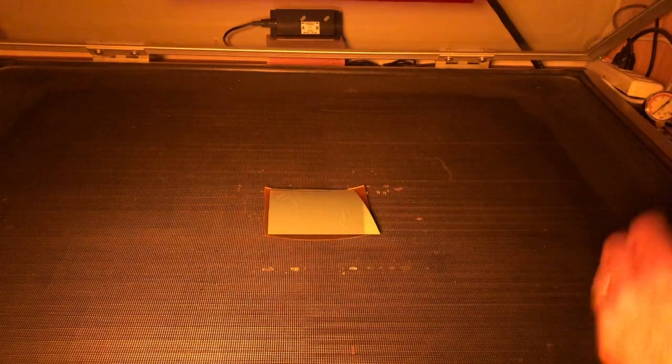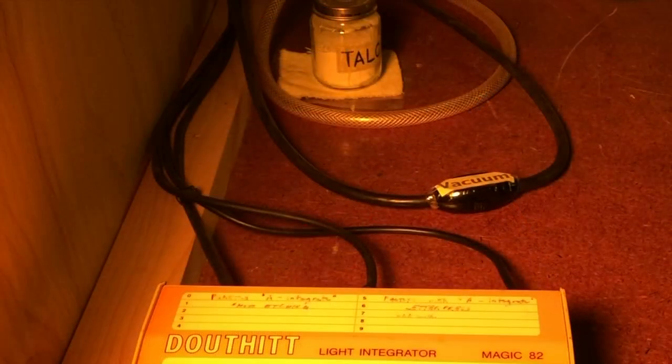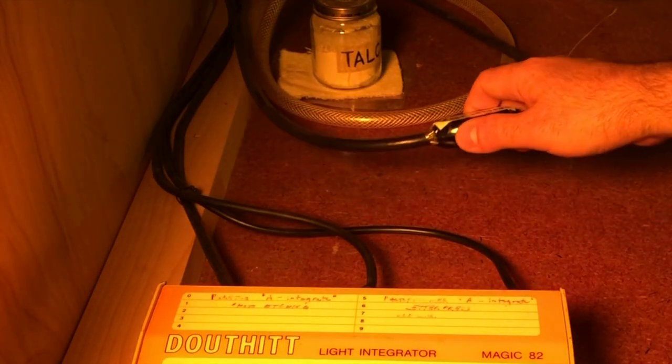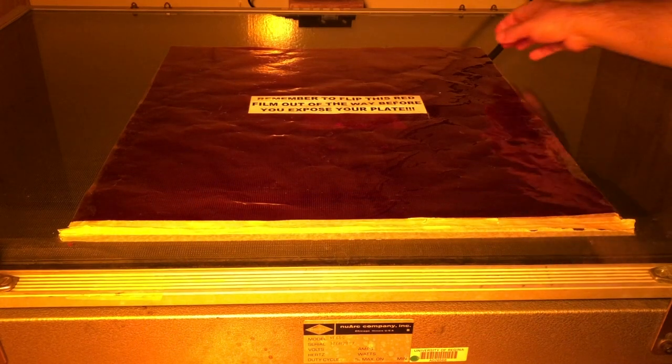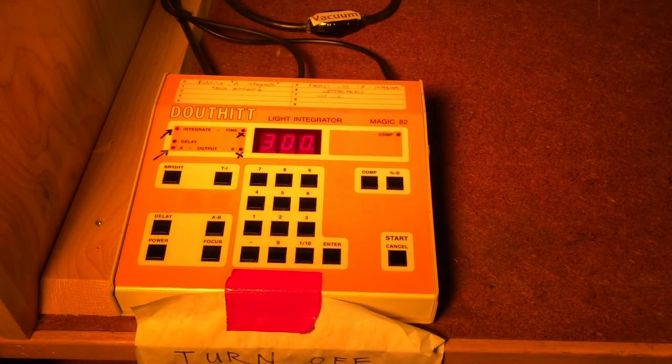When you think the plate and the transparency are in the right position, slowly lower the glass, engage the hasps, and turn on the vacuum. There's the vacuum switch. Once the vacuum has sucked all the air out, remember to remove that red film out of the way. One last check to make sure that nothing has shifted. Close the curtain, and we're ready to press start.